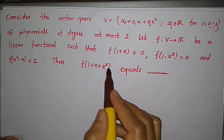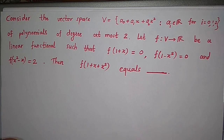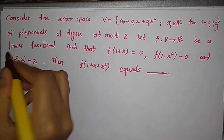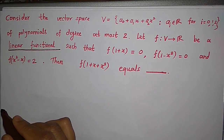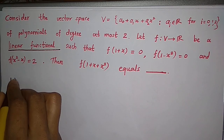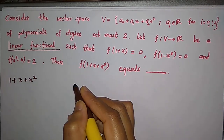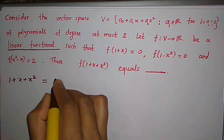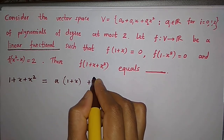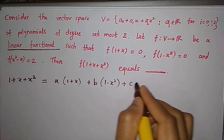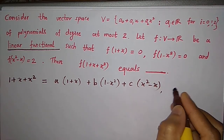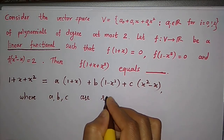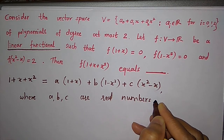The question asks about f(1+x+x²), and since f is a linear functional, we will express 1+x+x² in terms of (1+x), (1−x²), and (x²−x). We write this as a·(1+x) + b·(1−x²) + c·(x²−x), where a, b, and c are real numbers.